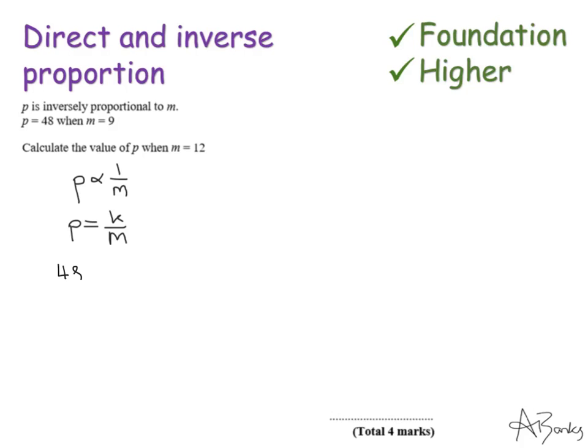So p is 48 and m is 9. So to find my value of k here, I'm going to do 48 multiplied by 9, which is 432. So that's my value of k, which means I can improve this formula that I had up here. So p is 432 over m. So that's the formula that connects p and m. But the question is actually asking, calculate the value of p when m is 12. So I'm going to substitute m is 12 into my formula. So p equals 432 divided by 12. And that's just 36. So that's my answer.